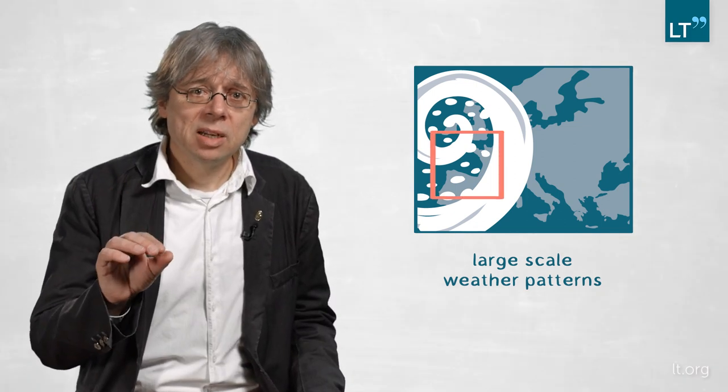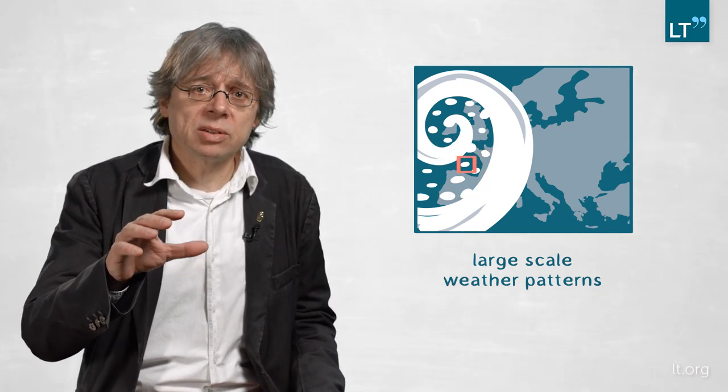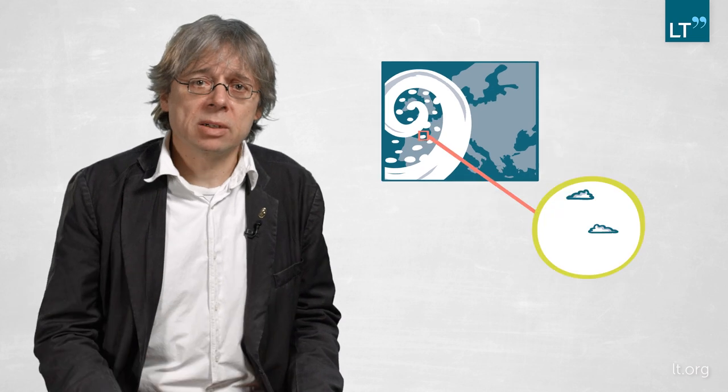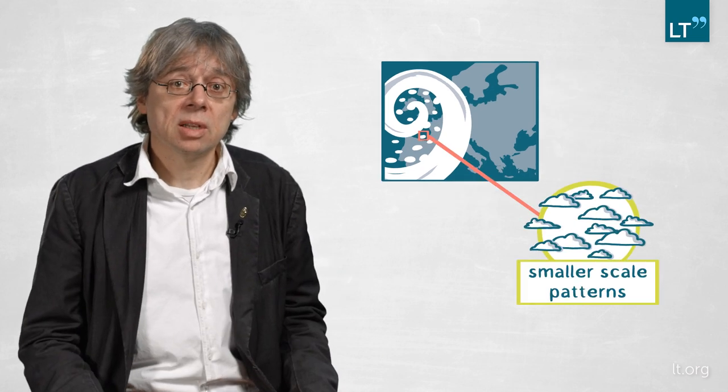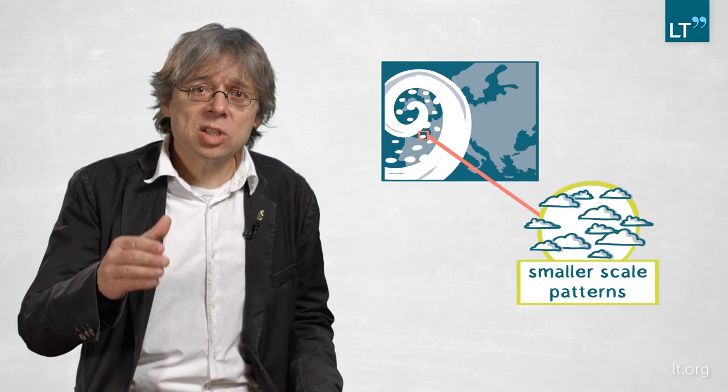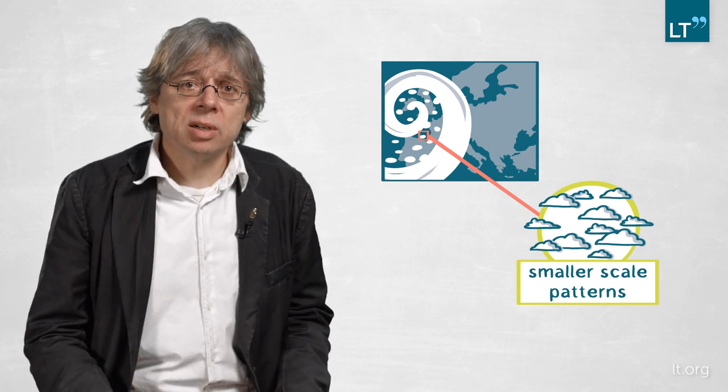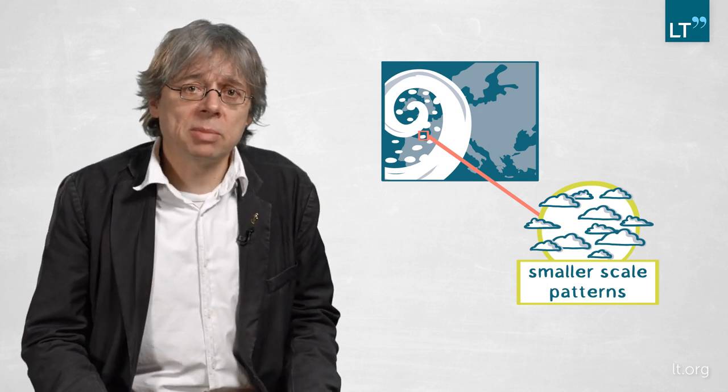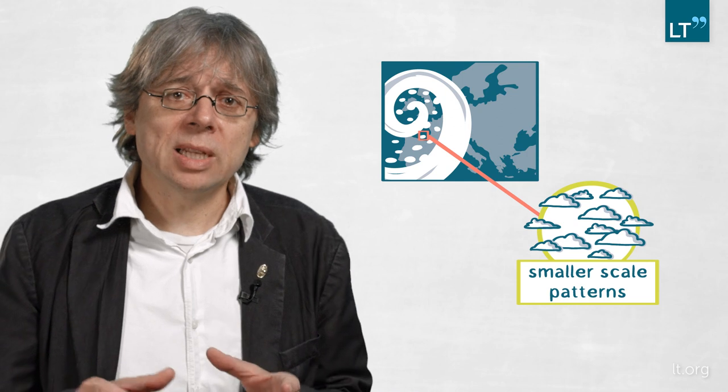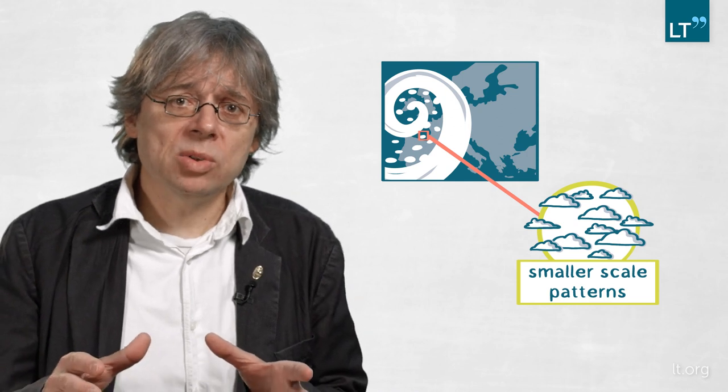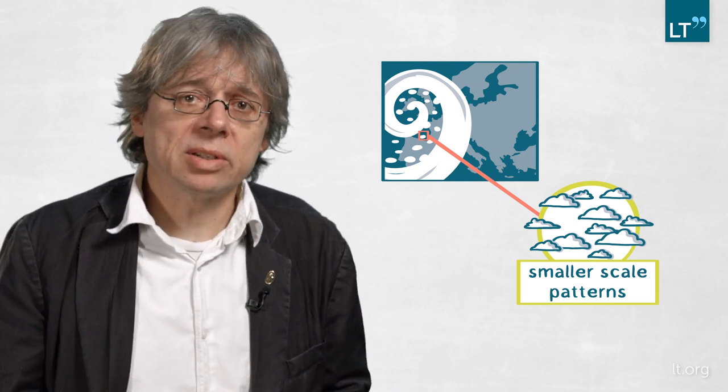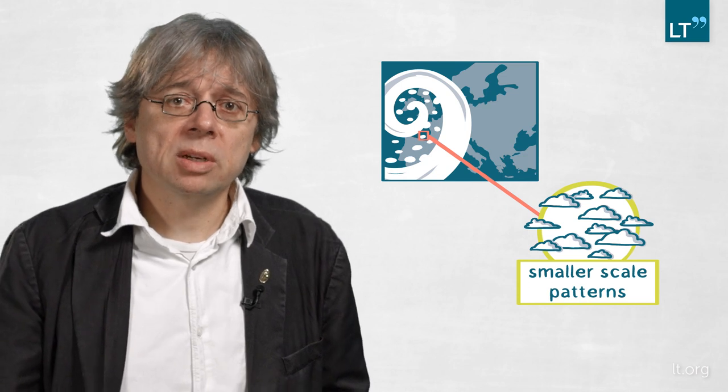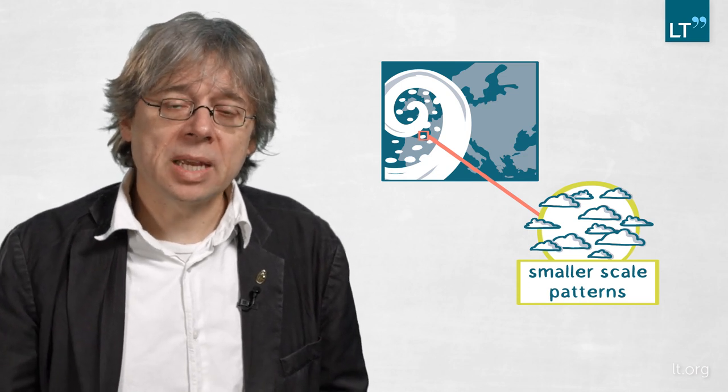But if you look in more detail, what you find is on smaller and smaller scales there's also a similar patterning of cloudiness. And the question then is: are the small scales of motion important to say something quantitative about how cloudy it is? So what we'd really like to know is how much do these smaller and intermediate scales of motion contribute to determining Earth's cloudiness and how it might change?